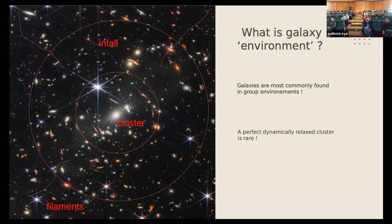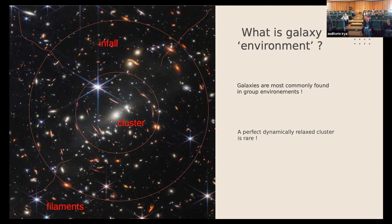Two key pieces of wisdom I've gained from working in galaxy evolution: first, galaxies are most commonly found in group environments, even if you think most galaxies exist in field or non-cluster environments. Second, a perfectly dynamically relaxed cluster is essentially a rarity. Whatever perfect picture we show, an actual galaxy cluster is never that simple to interpret, and that is one of the reasons why I'm working on evolving environments.